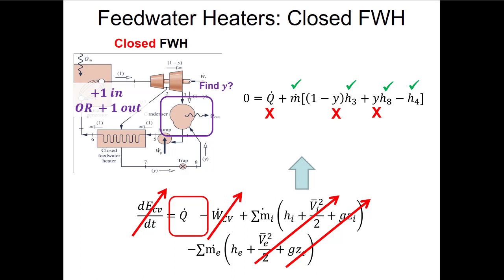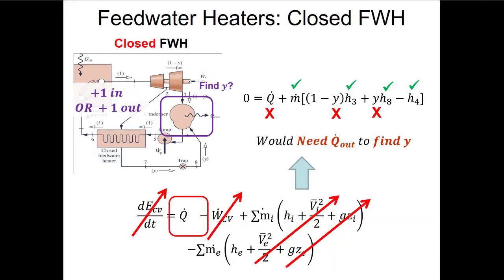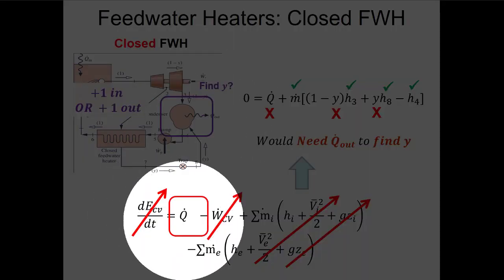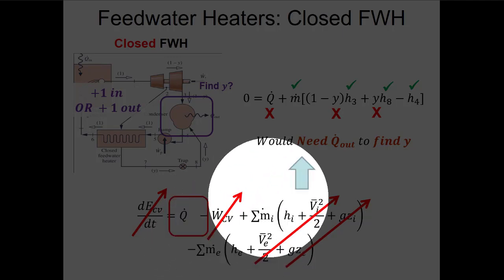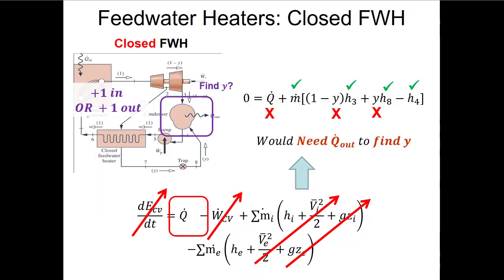In order to find y from the condenser, we would need to know how much heat is rejected. Sometimes we'll be given a cooling stream with a known temperature rise through the condenser, which we could use to find q-dot, or we could just treat that cooling stream as another inlet and exit flow. You can also do a condenser analysis for open feed water heaters, though y won't appear directly — you might still need it to find the cooling water mass flow rate.